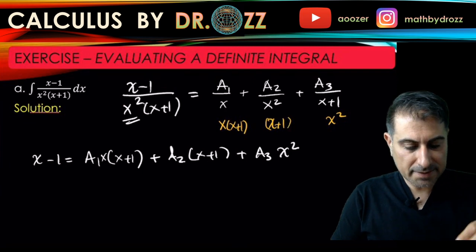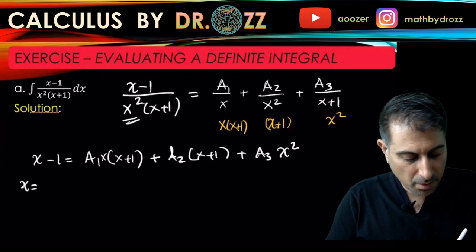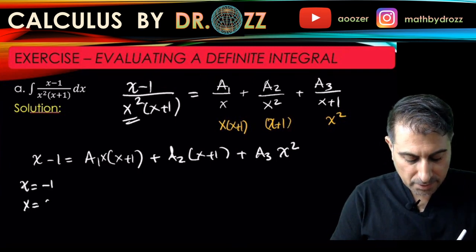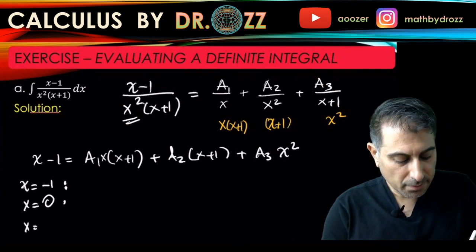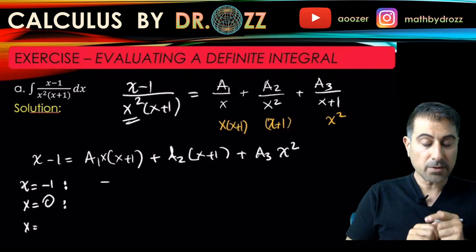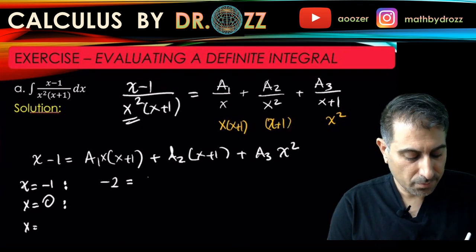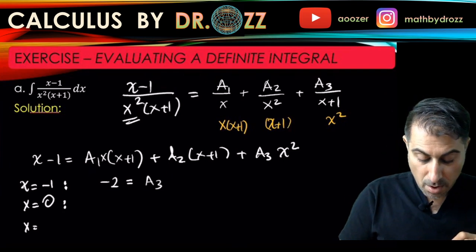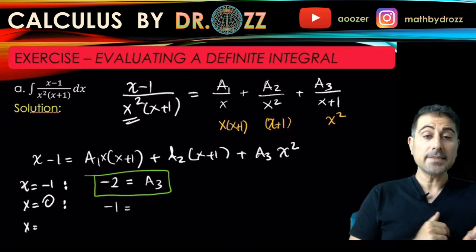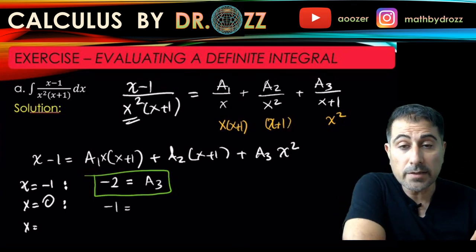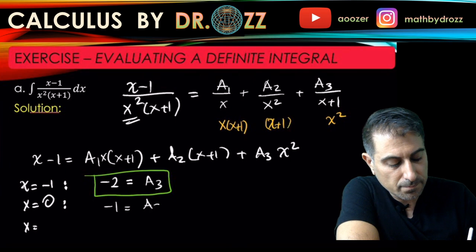Right now, I'm going to find a common denominator. We're equating only the numerators. So A1 times x times x plus 1, A2 times x plus 1, and A3 times x squared. Let's give simple values for x. Let's start with maybe negative 1 and 0. For x equals negative 1, the left-hand side is negative 2. All two factors on the right are gone, so you have only A3, and that is A3 equals negative 2. That's good. And then for x equals 0, left-hand side is negative 1. The first and the last terms in the right-hand side are gone. So this implies that A2 equals negative 1.